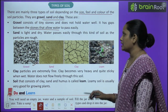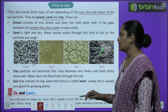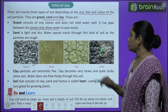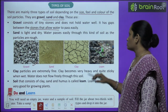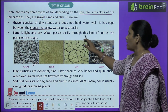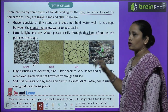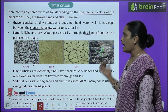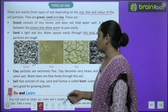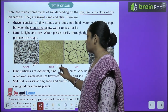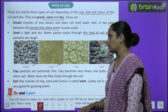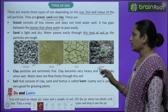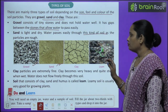Next comes sand. Sand is light and dry, and water passes easily through this kind of soil — aur paani jo hai is soil se bhi bahut easily nikal jaata hai — as the particles are rough — kyunki yahaan jo particles hain wo kaafi zyada rough hote hain.